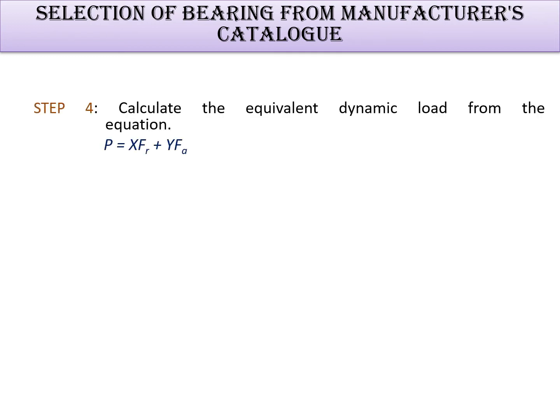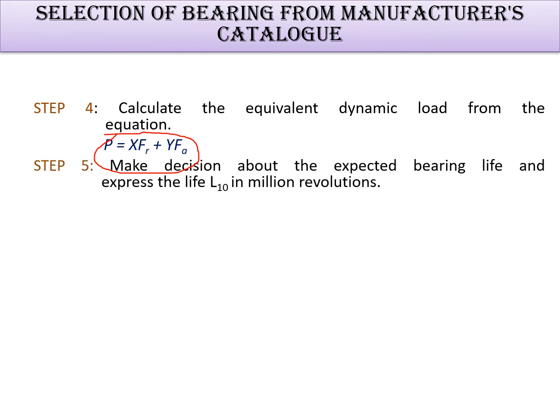We have already seen the X and Y value table, which is Table 15.5. The fourth step is to calculate the equivalent dynamic load. Once you have the X and Y factors, use the equivalent dynamic load equation to compute the equivalent dynamic load.